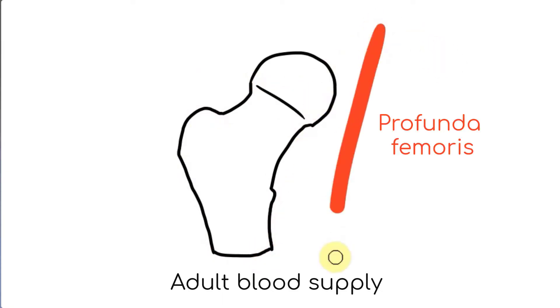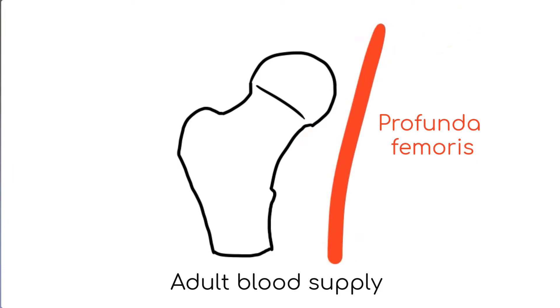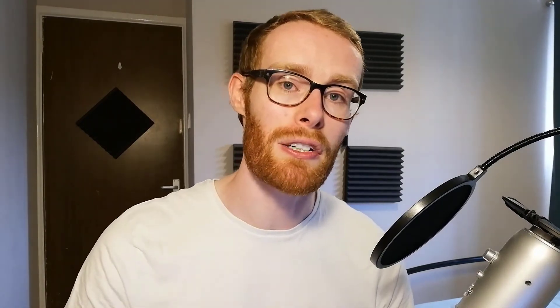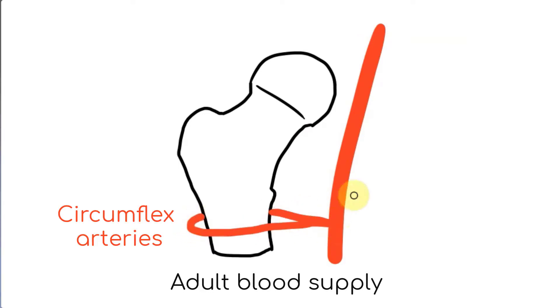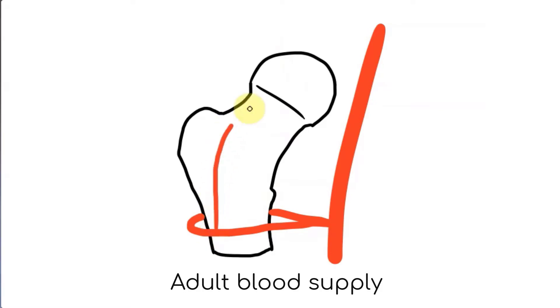The blood supply starts at the profunda femoris artery. If someone is profound then they're deep — they read poetry, they listen to jazz — and so this artery is the deep artery of the thigh. As it heads distally it gives off circumflex vessels that wrap around the proximal femur, and from here small retinacular branches travel proximally to supply the head.